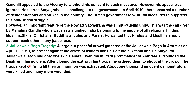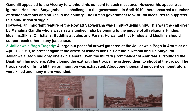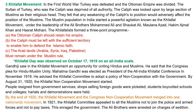The troops kept on firing until their ammunition was exhausted. General Dyer ordered to shoot at the gathered mob — there were children, men, and women present. More than a thousand innocent demonstrators were killed and many more were wounded. This is the scene of Jallianwala Bagh and here that memorial.